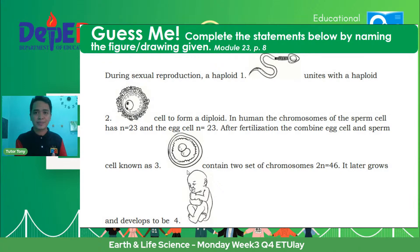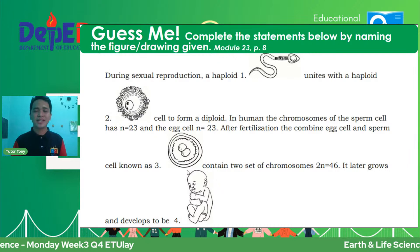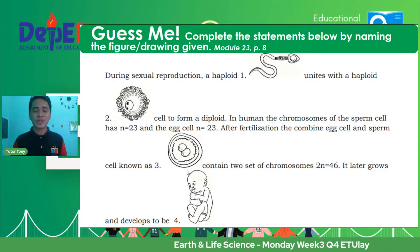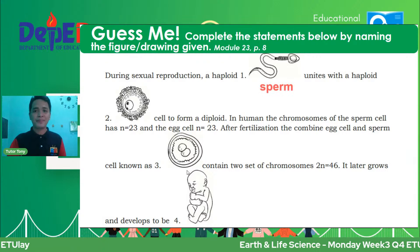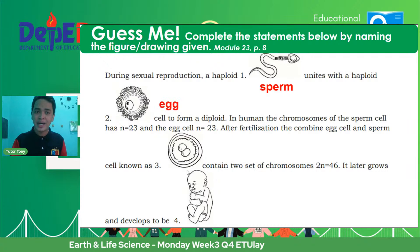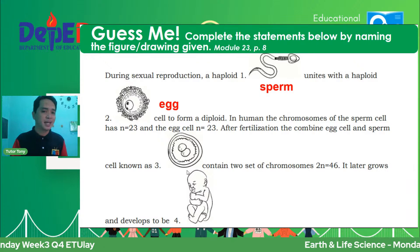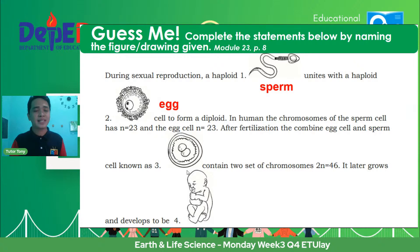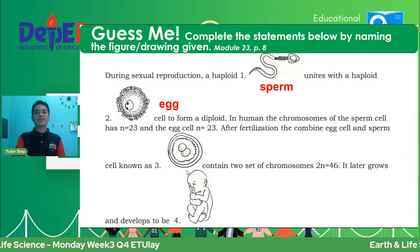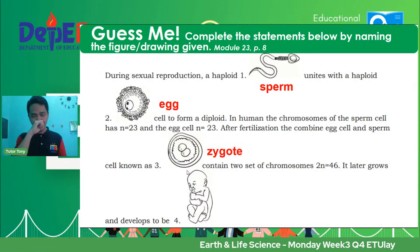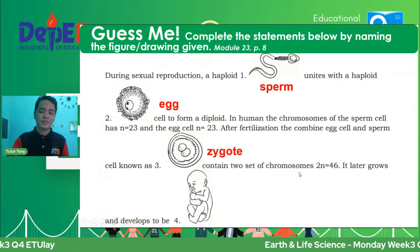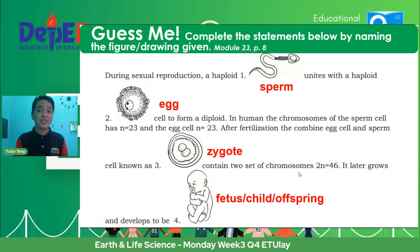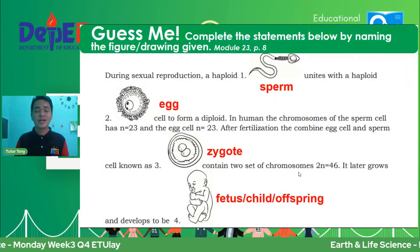Let's proceed with the next activity. Complete the statement by naming the figure given. During sexual reproduction, a haploid sperm unites with a haploid egg cell to form a diploid zygote. In humans, the sperm cell has N equals 23 chromosomes and the egg cell has N equals 23. After fertilization, the combined cell — the zygote — contains two sets of chromosomes, equivalent to 46 chromosomes. It later grows and develops to become an embryo, then fetus, then child — or in general biology terms, the offspring.